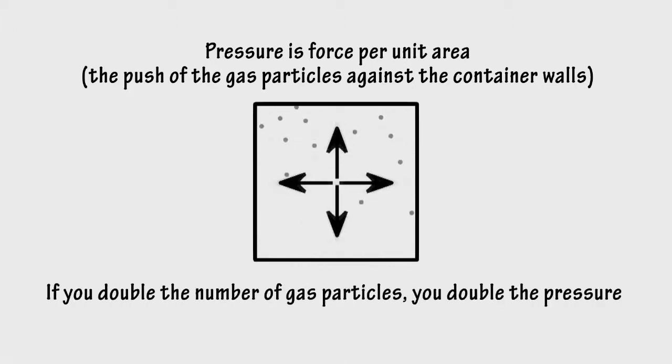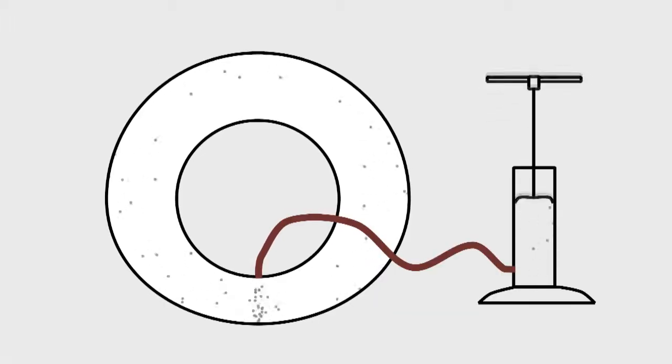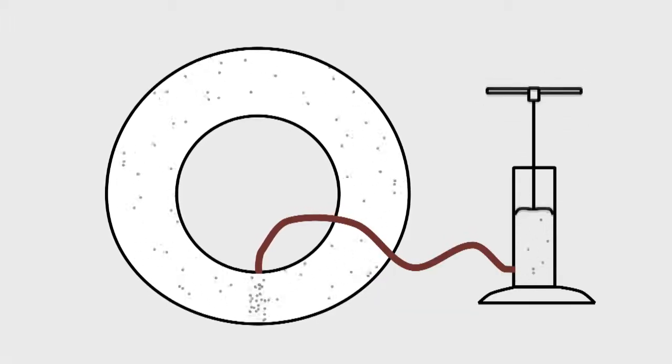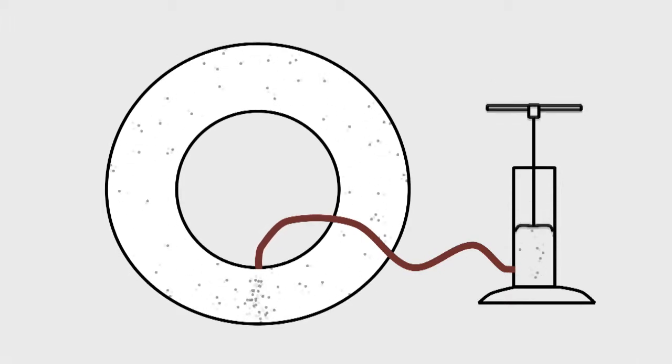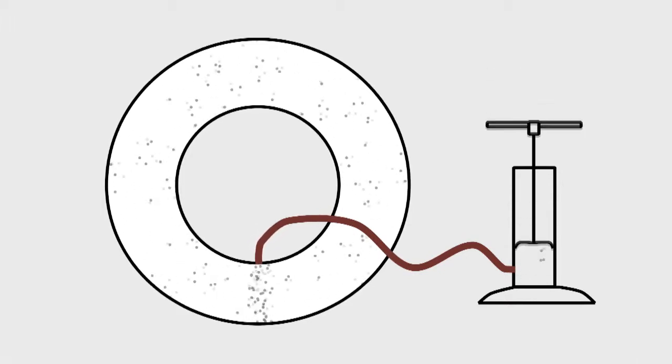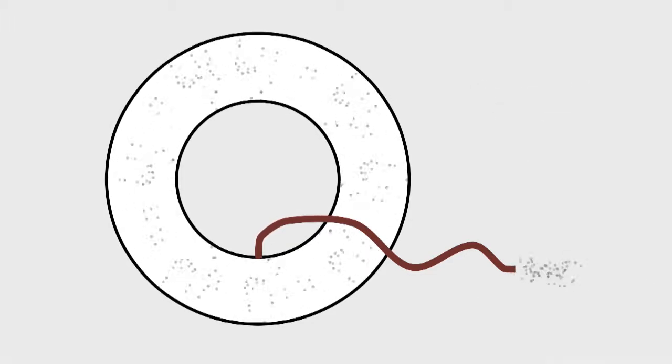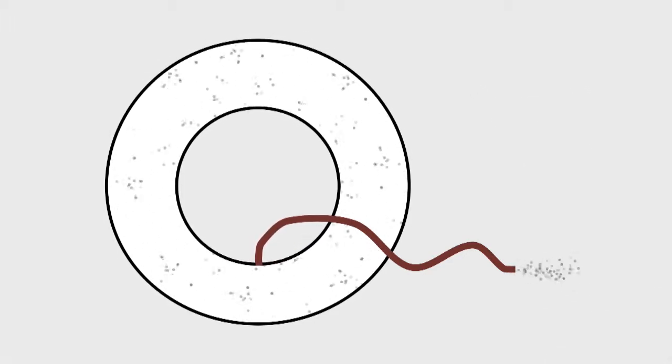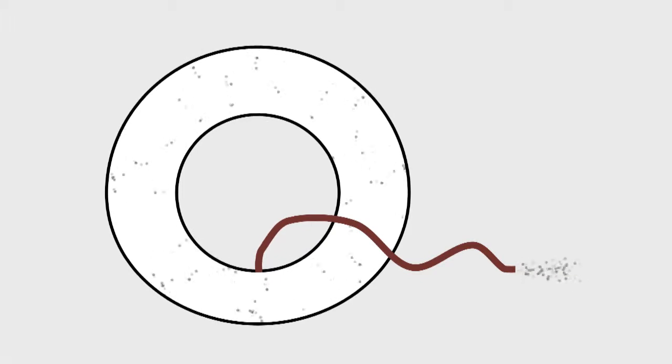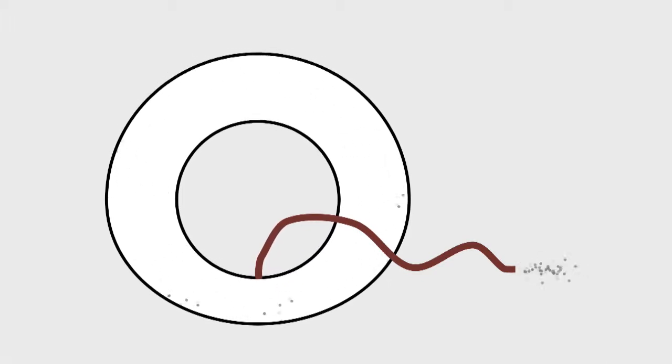If you double the number of particles, you double the push. When you pump up a tyre, you increase the number of air molecules trapped inside, and the tyre becomes rigid as the molecules push outwards against its inner walls. Let air out, and the tyre becomes flaccid because the number of molecules pushing out against the inner walls has decreased.